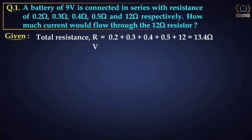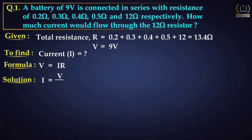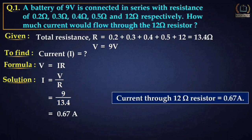V is also given as 9 volt. We have to find the current I. The formula is V equal to IR, rearranging gives I equal to V by R. Putting values: V is 9 and R is 13.4, therefore current I equals 0.67 ampere. The current through the 12 ohm resistor is 0.67 ampere.